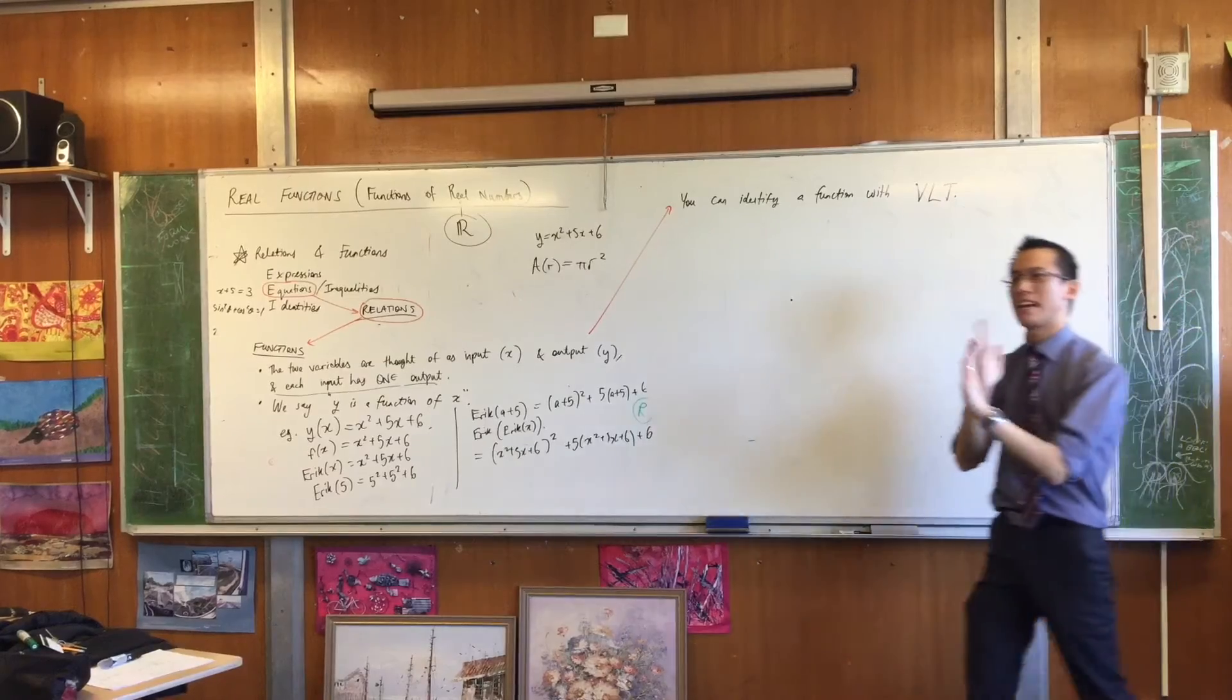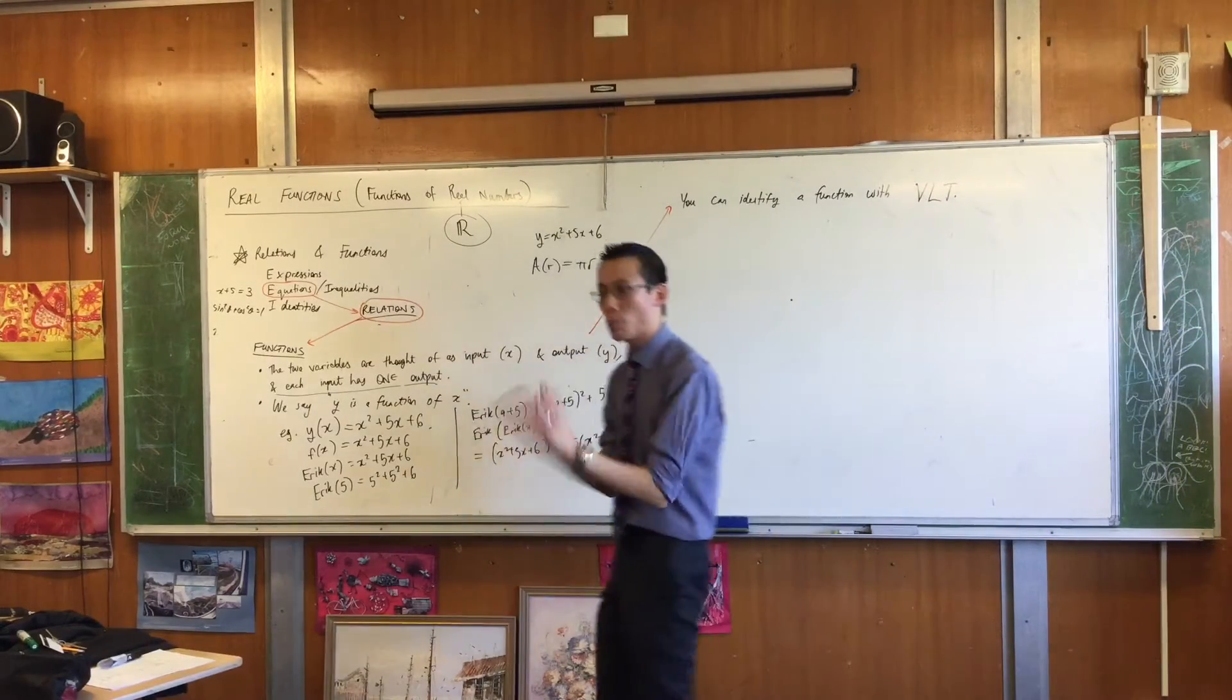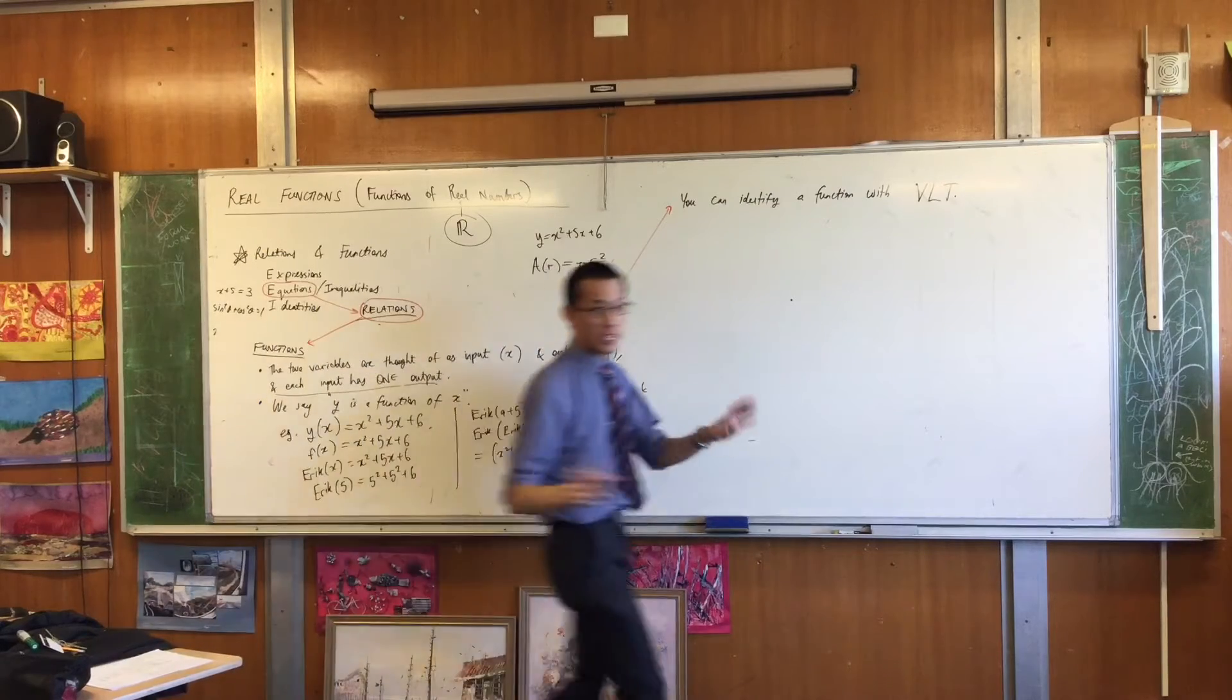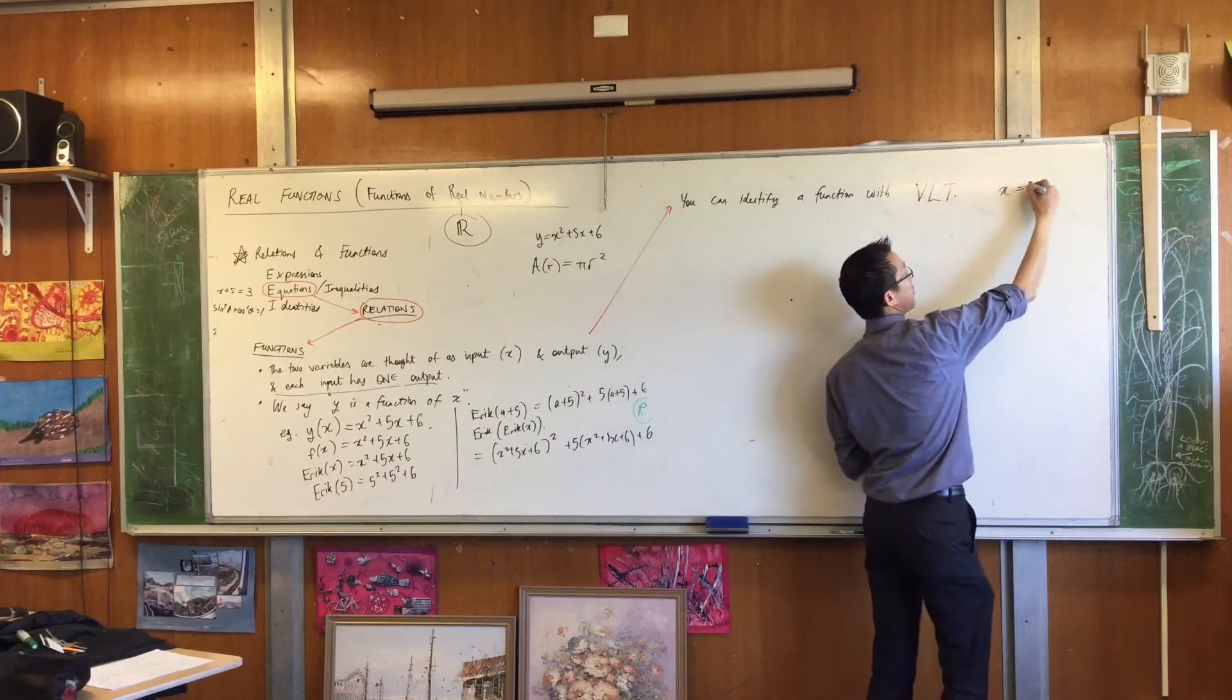And then you put it up against the unit circle, and what happens? Intersects twice. In fact, some functions will intersect more than twice. How do you think about what this would look like?